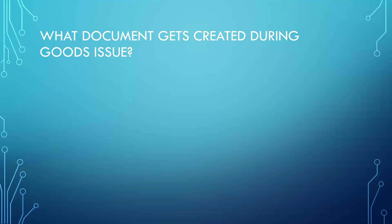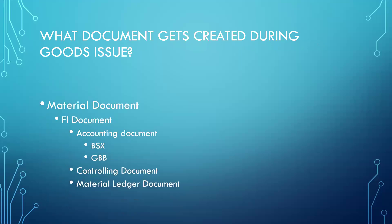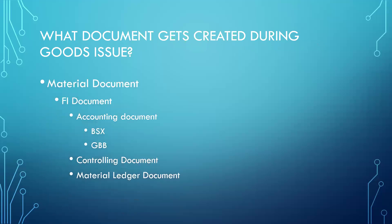Next question: what documents get created during goods issue? When you do the goods issue, a material document gets created. In addition, FI documents are created — that is the accounting document, controlling document, and material ledger accounting document. The transactions involved are BSX and GBB.